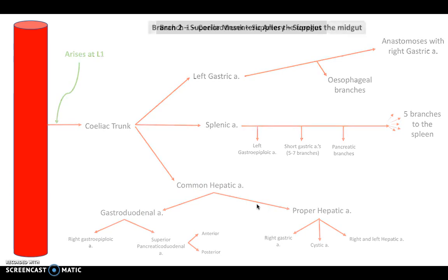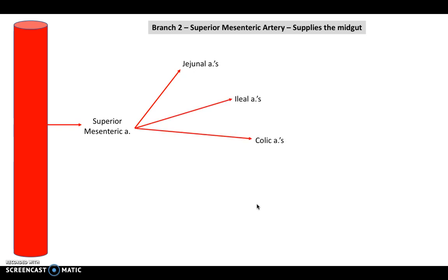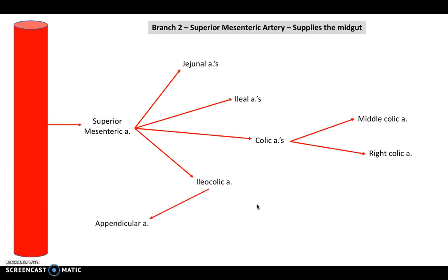The superior mesenteric artery arises at the lower part of L1 and is a little simpler. It divides into four main branches: jejunal arteries going to the jejunum; ileal arteries going to the ileum; colic arteries, subdivided into middle and right colic; and the ileocolic artery, which divides into the appendicular artery and the anterior and posterior cecal arteries.